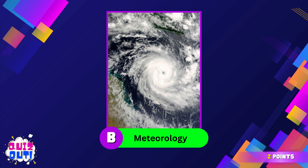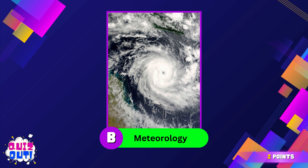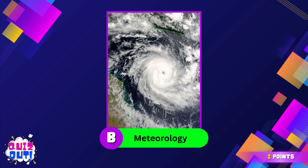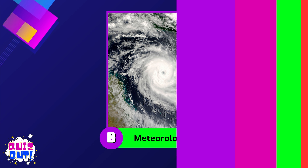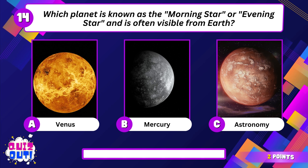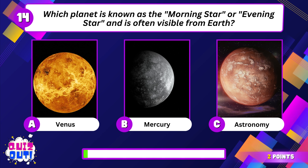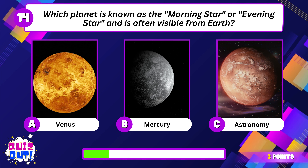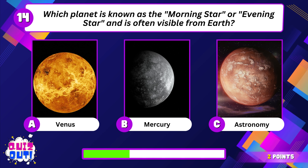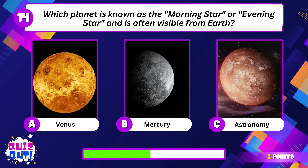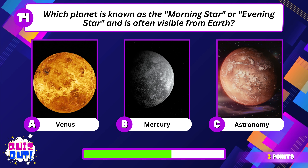Which planet is known as the morning star or evening star and is often visible from Earth? Venus.